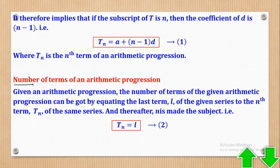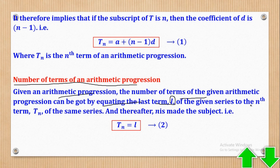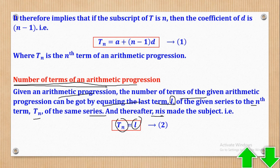Another important concept is the number of terms of an arithmetic progression. Given an AP, the number of terms can be found by equating the last term (denoted by the symbol L) of the given series to the Nth term TN, and thereafter making N the subject. So when asked for the number of terms, equate the Nth term formula to the last term, then solve for N.